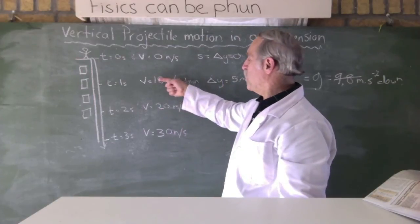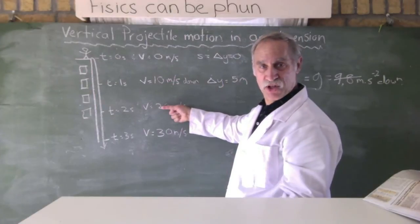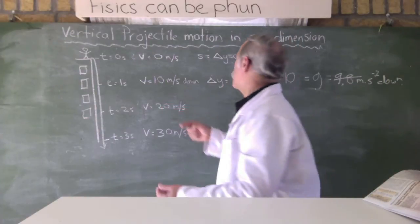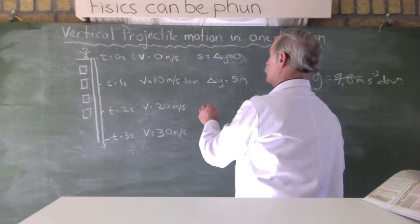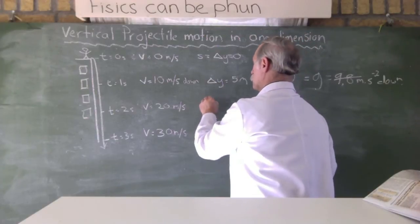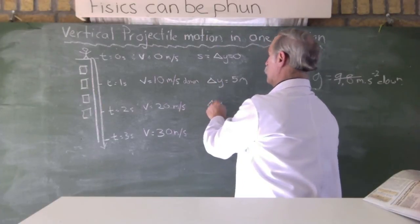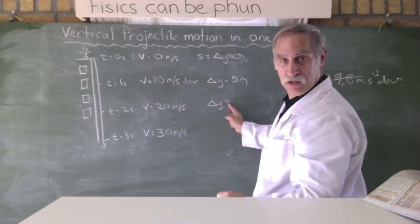So, between here and here, it's going to travel an average of 15 meters. So, its change of displacement is going to be equal to 15 meters.